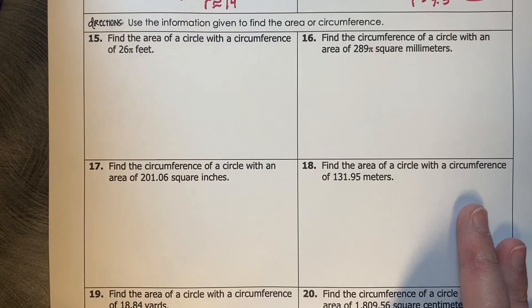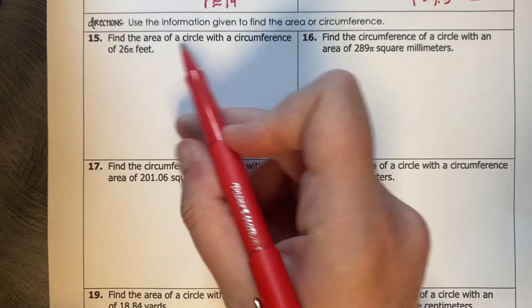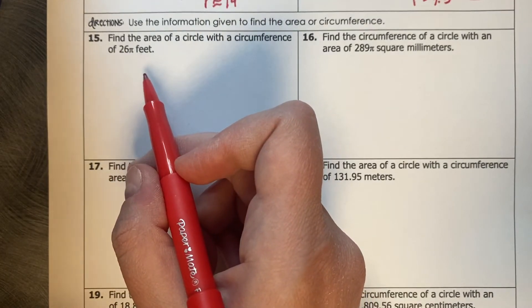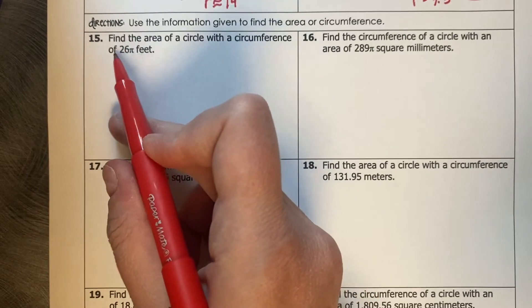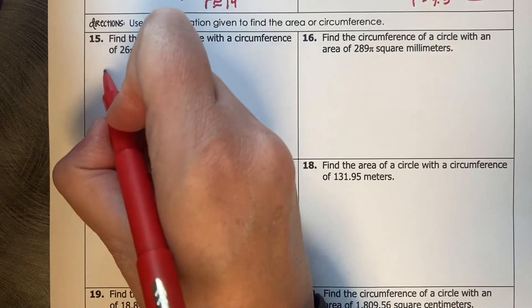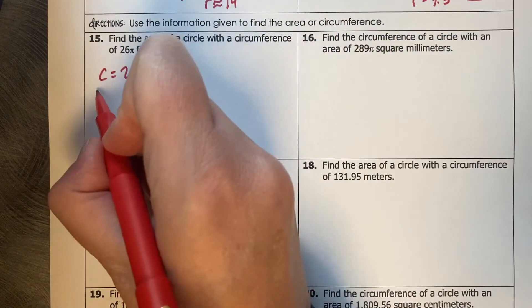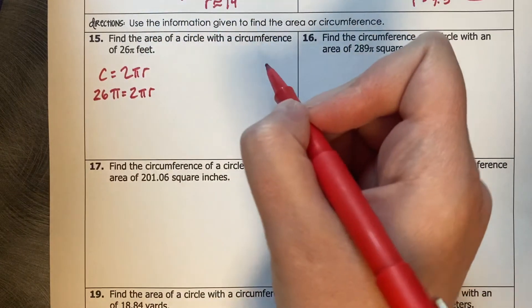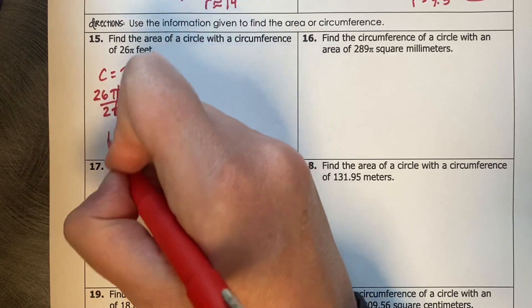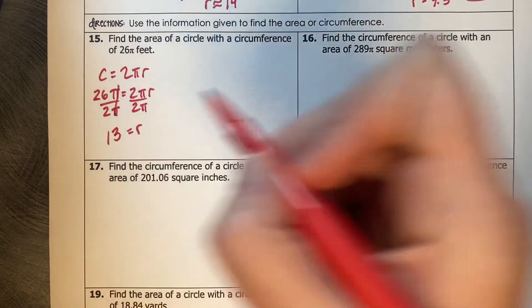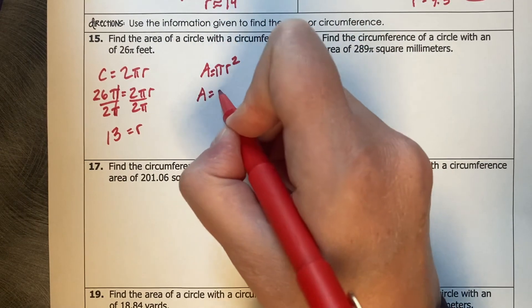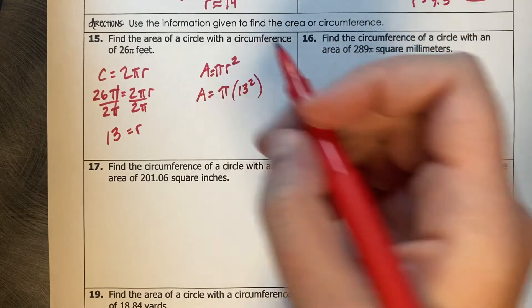Last section. Use the information given to find the area or circumference. Find the area of a circle with a circumference of 26 pi feet. The key to any of these formulas, the overlapping piece, is the radius. So what you need is to extract a radius from this circumference in order to calculate the area. So the first thing we're going to do is work backwards with the circumference formula, which is 2 pi r. And we're going to plug in the 26 pi into 2 pi r. Divide by 2 pi. So then the pi is cancelled, 26 divided by 2 is 13. So now we know the radius. If we know the radius, we can use that to calculate the area, which is pi r squared. So then the area is pi times 13 squared. 13 squared is 169 pi.